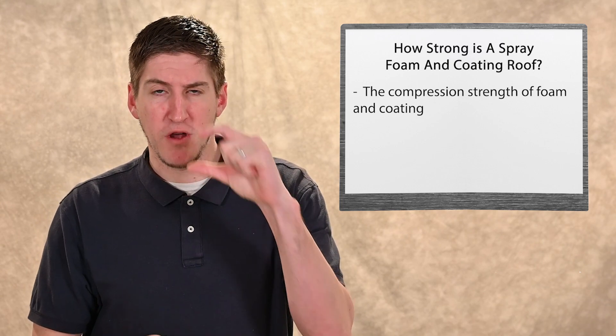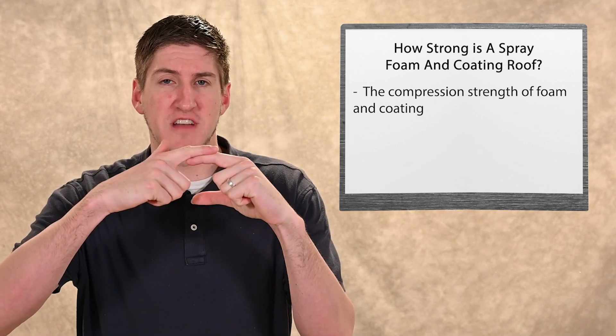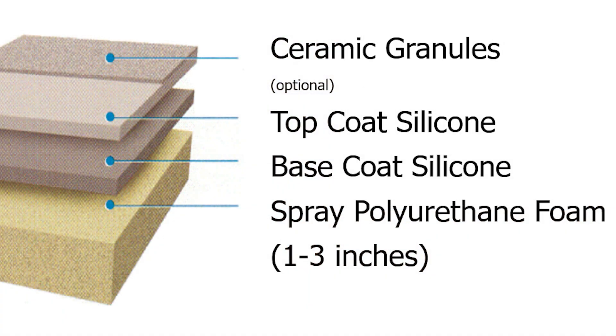There's spray foam that gets installed, and the coating goes over the top of that. There's no PSI for the coating, but the foam and coating is the same roofing system. There are two parts to one system, so the foam has 40 to 80 pounds per square inch, and that's good enough to represent the whole system.